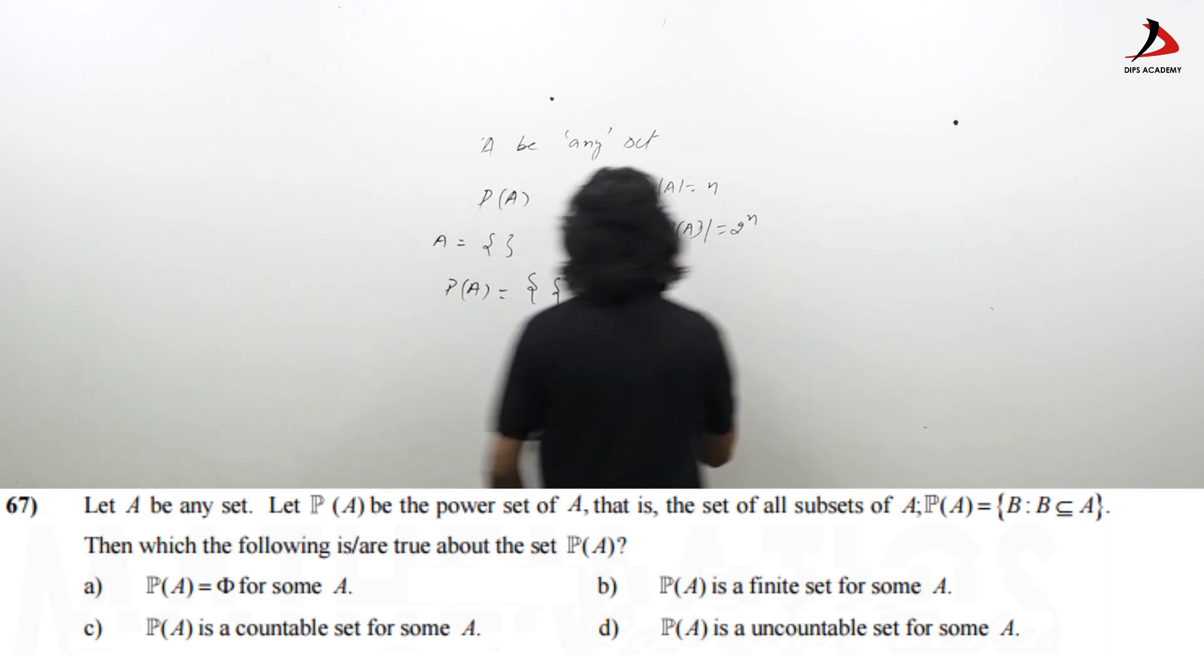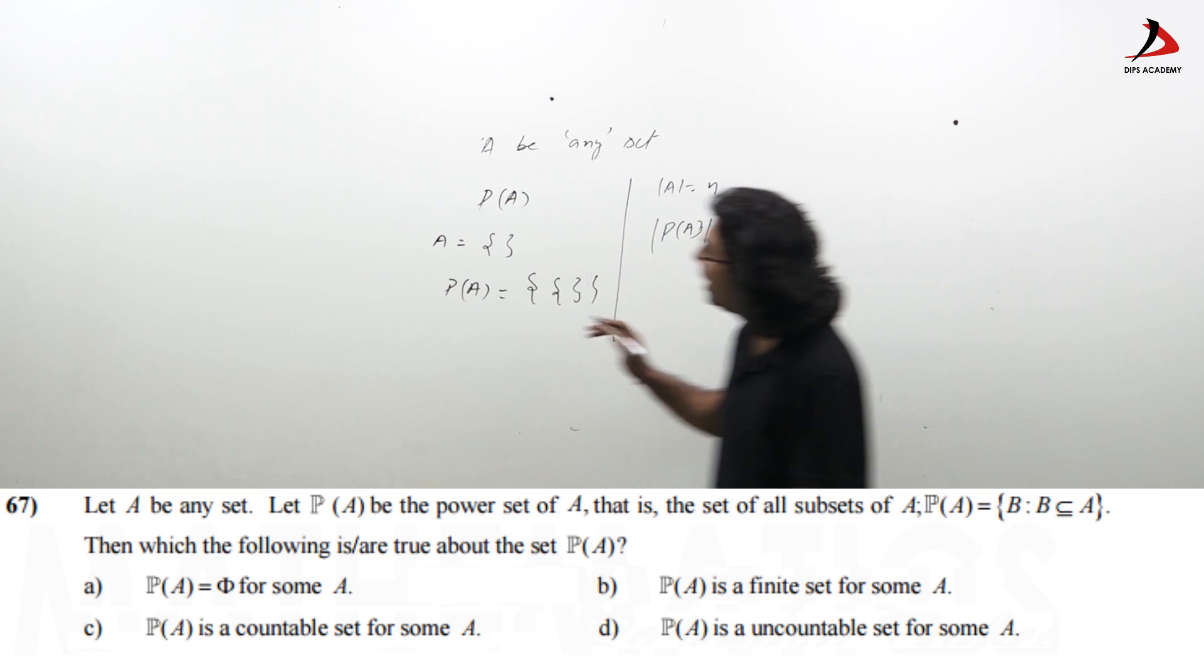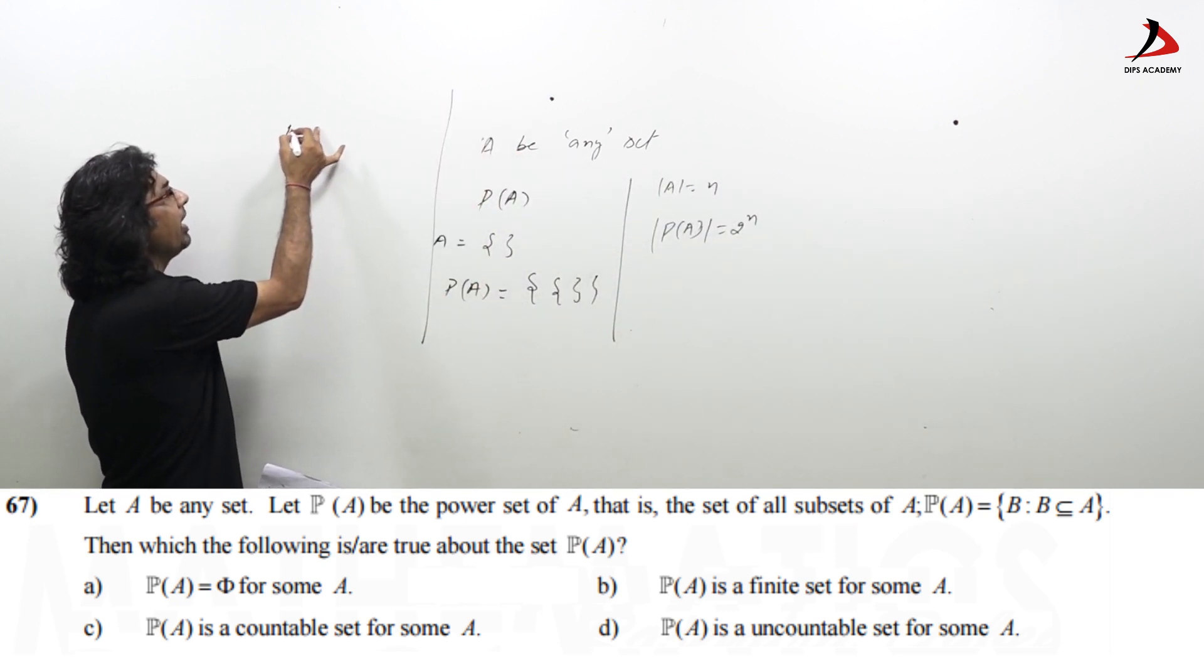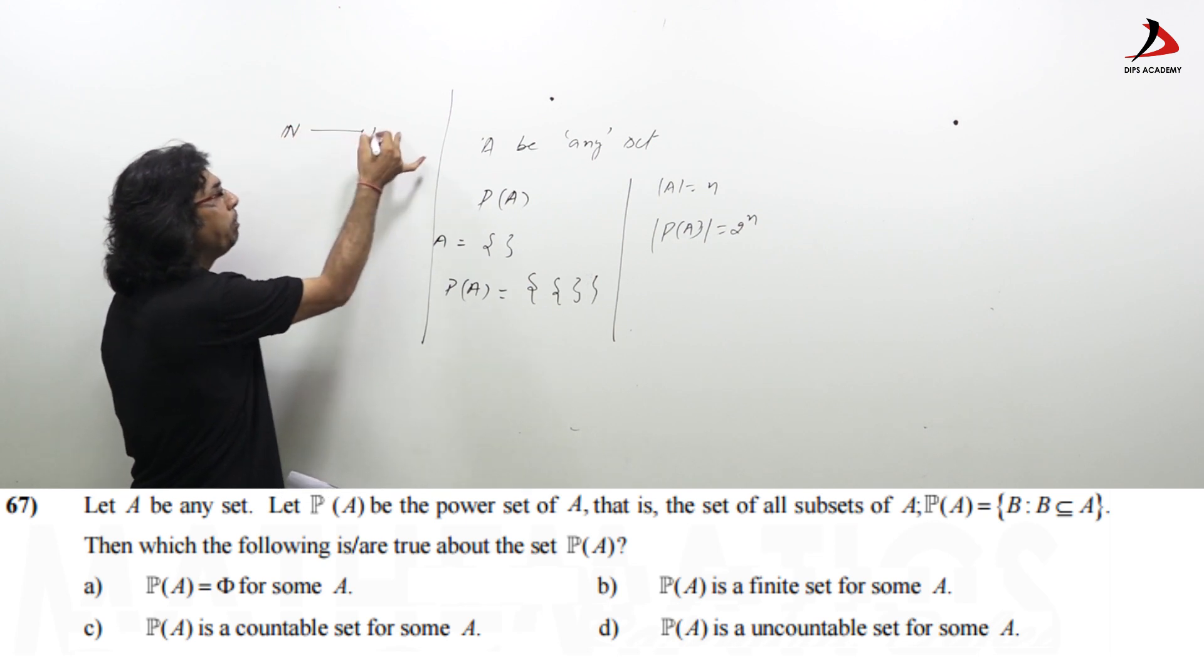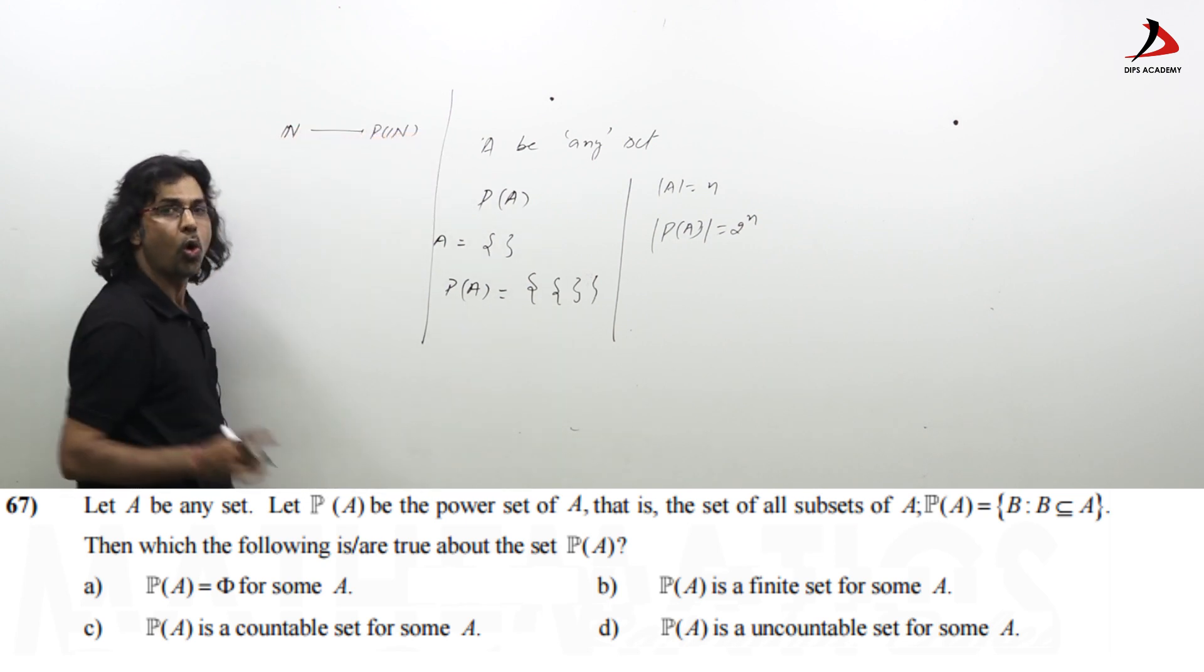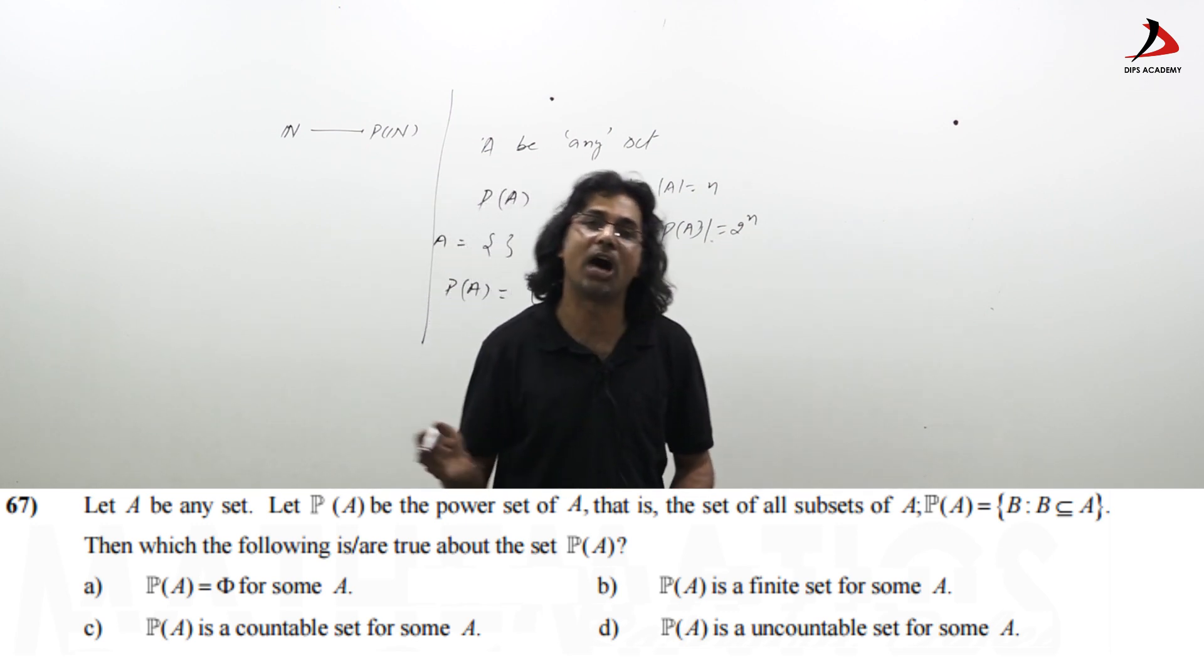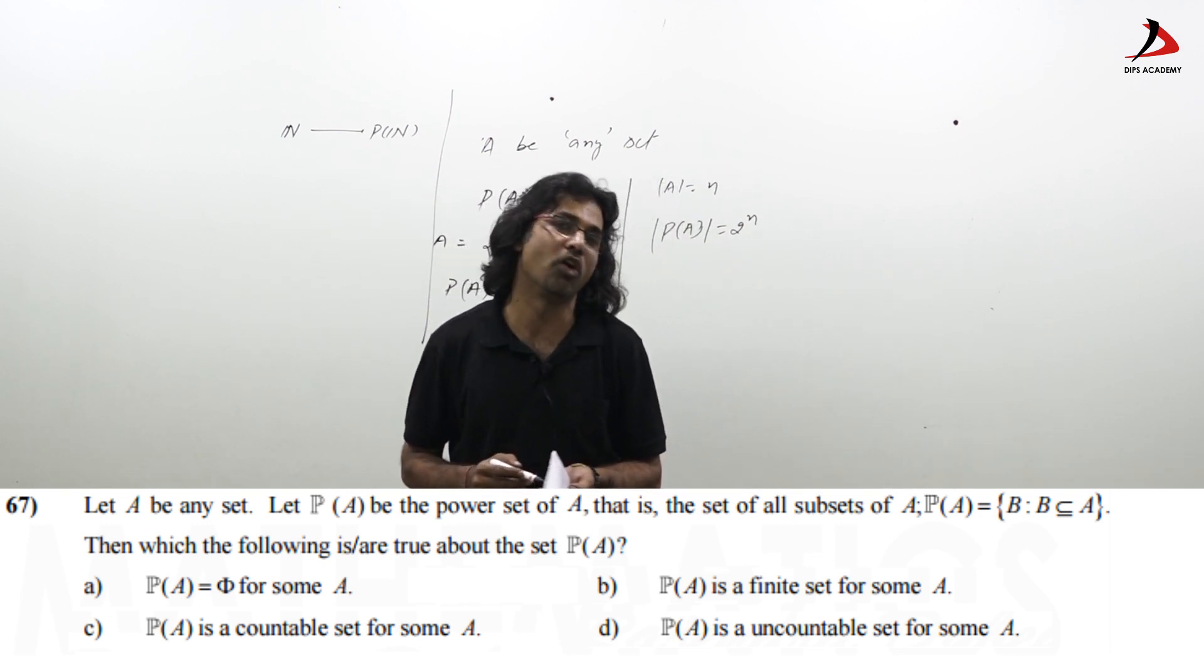So, here, by Cantor's theorem, I just elaborate the concept of this question as, from N to P(N), onto map cannot be defined. From any set to its power set, onto map cannot be defined.